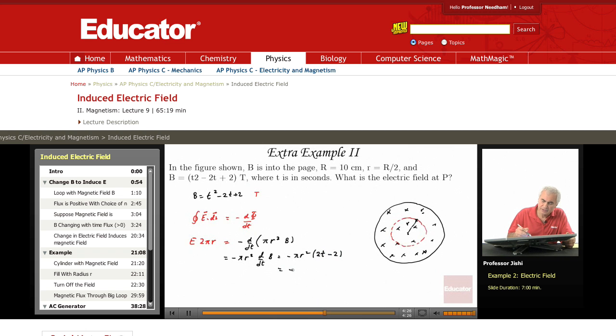So E is divided by 2πr, so you get E = -r(t - 1).